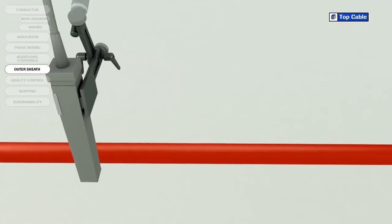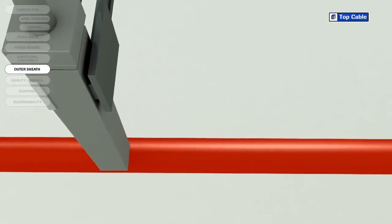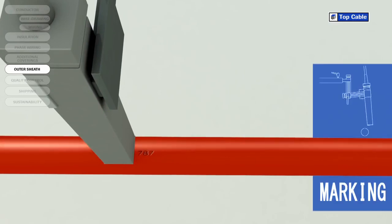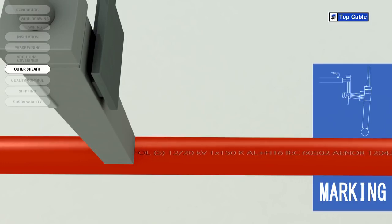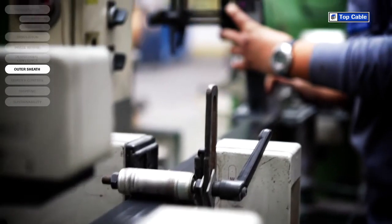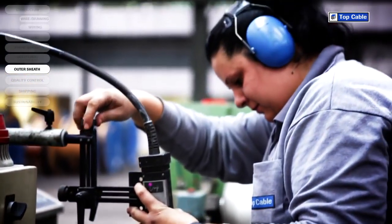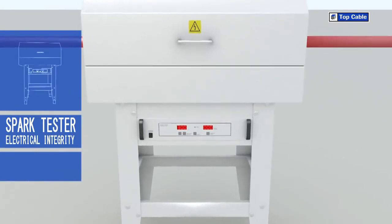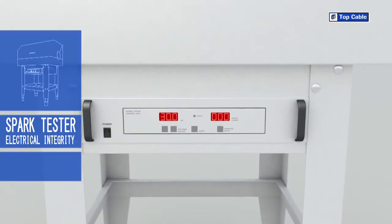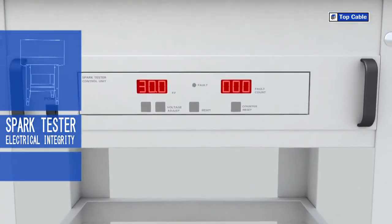So that all Top Cable customers can correctly identify their cables, the cables are marked with the most important information: manufacturer, trade name, cable name, number of conductors, cross section, construction regulation and standards, CE marking and other information of interest, such as the product's certification. There is also a meter by meter mark on the cable to help our customers with their stock control.